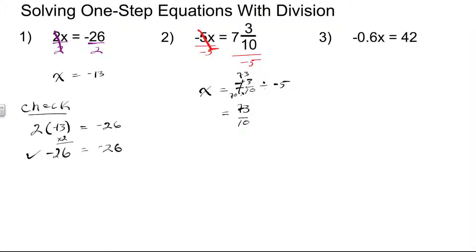On the right-hand side, instead of division, we multiply by the reciprocal of negative 5, which is negative 1 fifth. Multiplying the numerators: 73 times 1 is 73. And 10 times negative 5 gives negative 50. That gives us the improper fraction negative 73 over 50. Since 50 goes into 73 one time with 23 left over, we can also write this as negative 1 and 23 fiftieths.